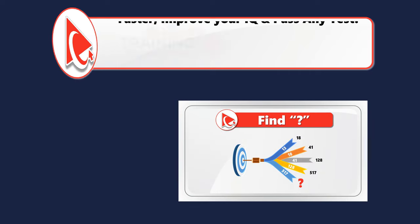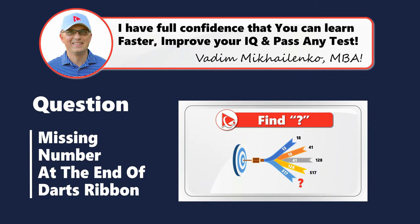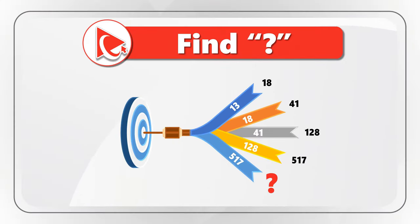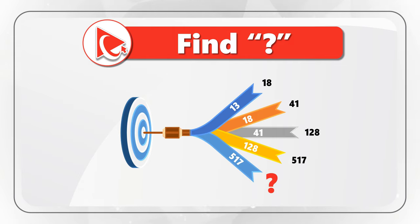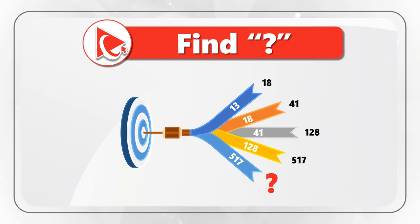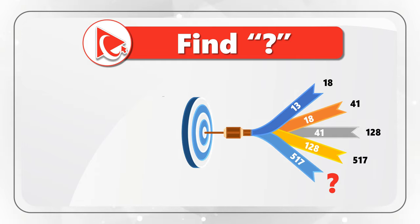You will enjoy this question because it tests your logical thinking and analytical skills. You are presented with a dart in the exact middle of the dartboard. The dart has numbers on top of the ribbon and at the end of the ribbon. The numbers on the ribbon are 13, 18, 41, 128, and 517. The numbers at the end of the ribbon are 18, 41, 128, 517, and then comes the missing number you need to calculate.